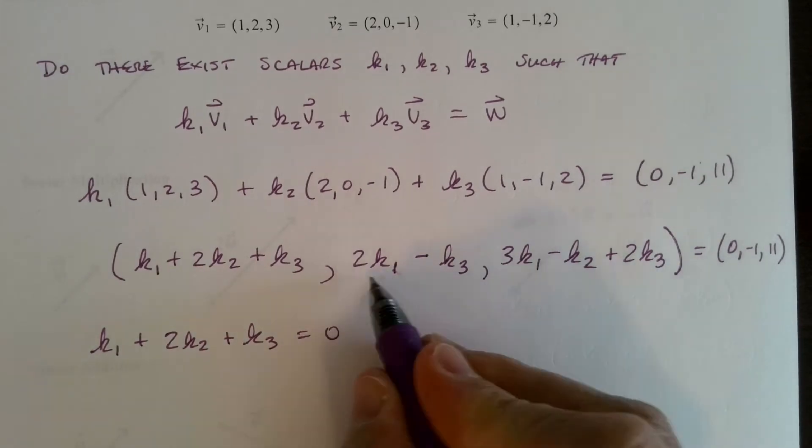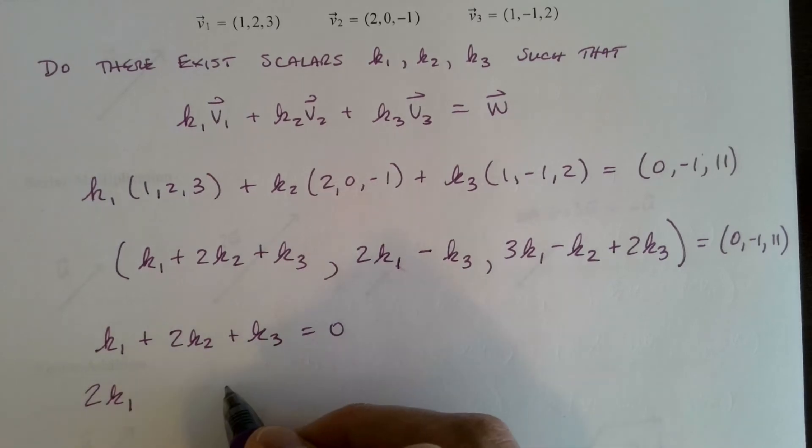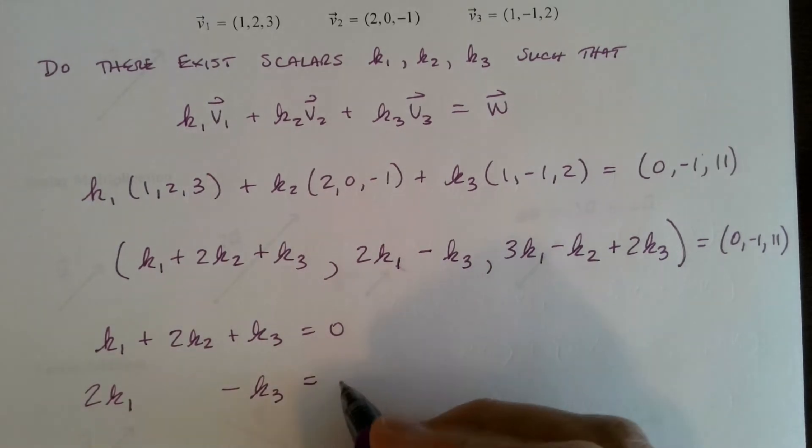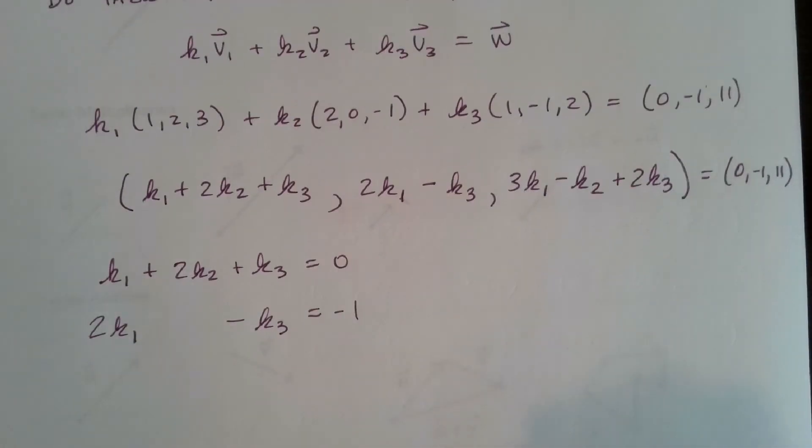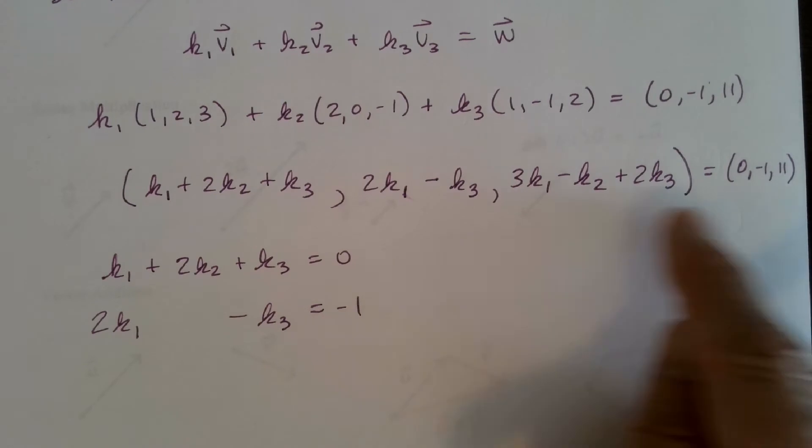The second component here must be negative 1. And I'm going to write this 2k1 minus k3 over here. Leave a little gap there. That should make you begin to think about what we're doing here.